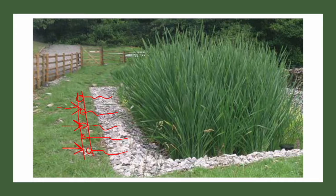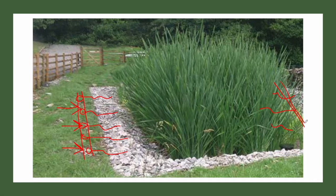The wastewater flows through the gravel media at a depth of around 40 to 50 centimeters and undergoes treatment. Then the treated wastewater exits through a perforated collection pipe and can be reused for irrigation, or further treated using a tertiary process such as chlorination or UV disinfection for safe disposal, depending on the regulations of the country.